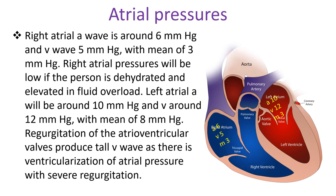Right atrial A wave is around 6 mmHg and V wave 5 mmHg, with a mean of 3 mmHg. Right atrial pressures will be low if the person is dehydrated and elevated in fluid overload. Left atrial A wave will be around 10 mmHg and V around 12 mmHg, with a mean of 8 mmHg.